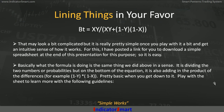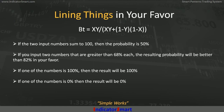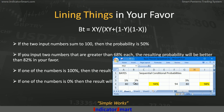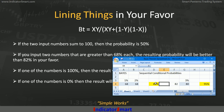Notice the following guidelines as you play with the sheet. If two inputs sum to 100, then the probability is 50%. If you have two numbers that are greater than 68% each, the resulting probability will be better than 82% in your favor. If one of the numbers is 100%, then the result will be 100%, and if one of the numbers is 0%, then the result will be 0%. So for example, 75 and 25 gives 50%, and 68 and 68 gives you 82% in your favor.